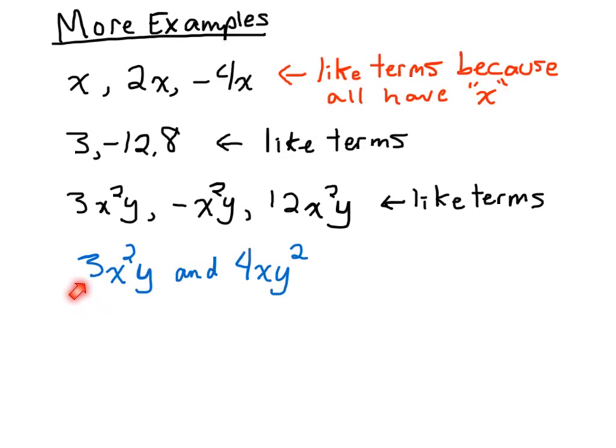Looking at this example, we see we've got 3x squared y, and the second term, we've got 4xy squared. Are these like terms, these two terms? No, they aren't. Because the variables are different. In the first one, there's x squared and a y. And in the second one, it's just an x and then a y squared.